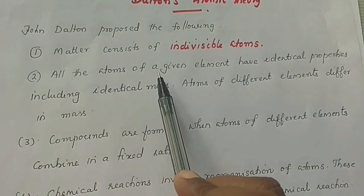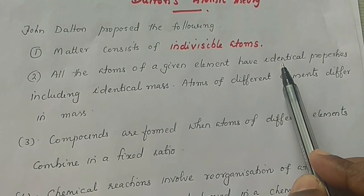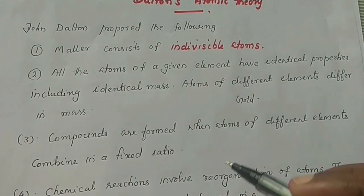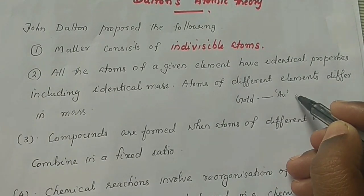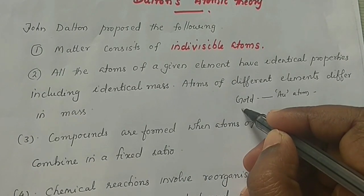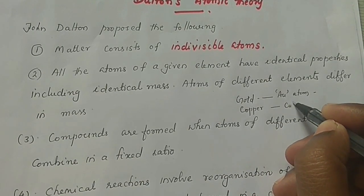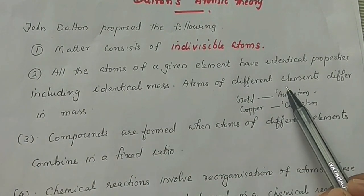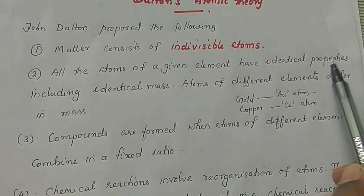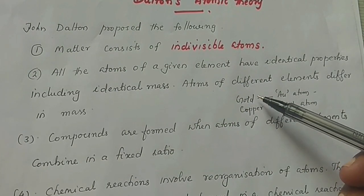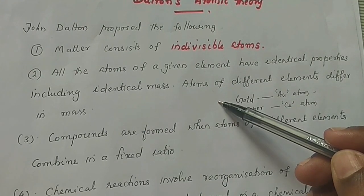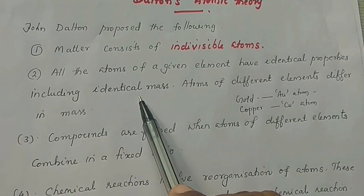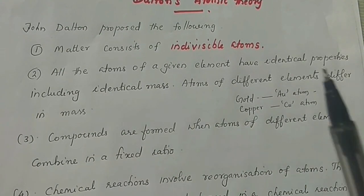The second point: all the atoms of a given element have identical properties including identical mass. For example, gold atoms all have identical properties, and copper atoms all have identical properties. Atoms of different elements differ in mass.